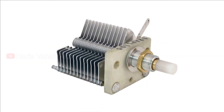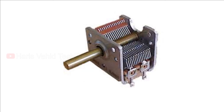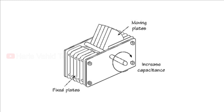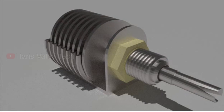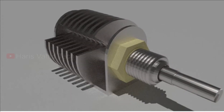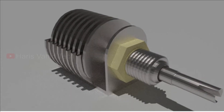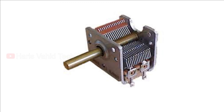Variable type capacitors are used whenever capacitance needs to be varied, mainly in resonant circuits such as radio tuners, frequency mixers, or antenna impedance matching applications. Air gang capacitors use air as their dielectric. They are made of two sets of semi-circular metal plates separated by an air gap — one set is fixed and the other is attached to a shaft that the user can rotate. The larger the overlap between the two sets of plates, the higher the capacitance. Maximum capacitance is achieved with maximum plate overlap, and minimum capacitance when there is no overlap.